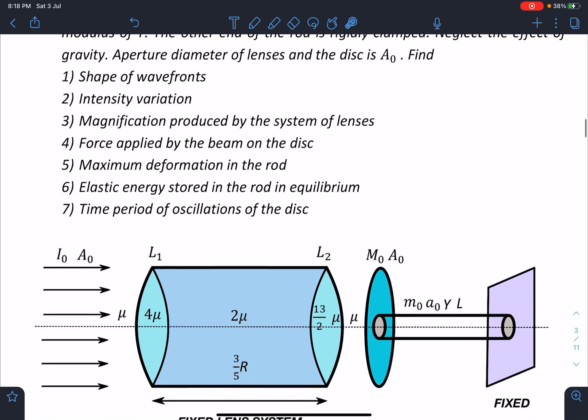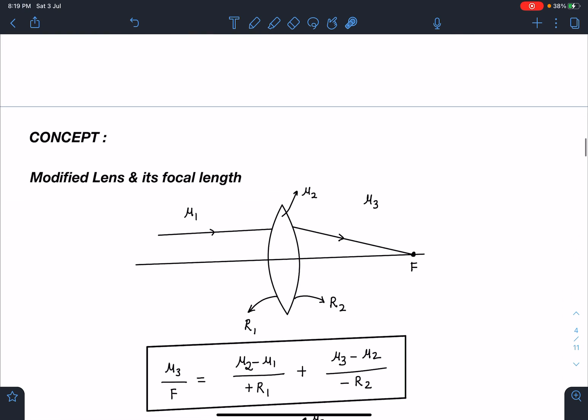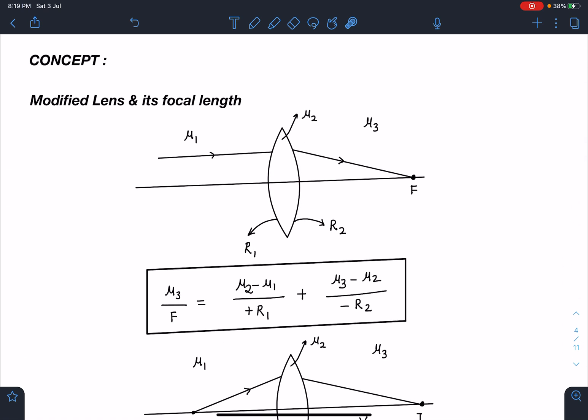As you can see in this diagram, we will try to break this problem into small concepts and then one by one we will be going. First thing is, let's see what exactly is going to happen at the lens system. One logic would be single surface refraction formula applied multiple times, but it will become slightly lengthy. So what I will do is I will be using modified lens and its focal length logic here.